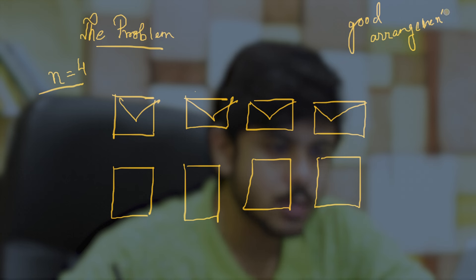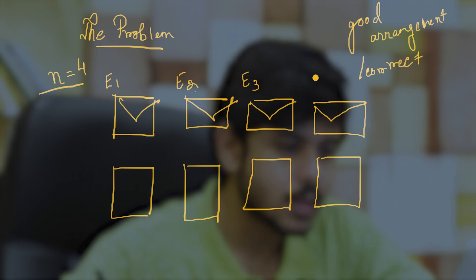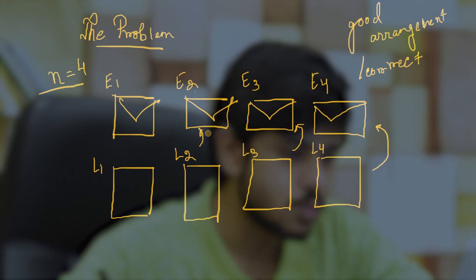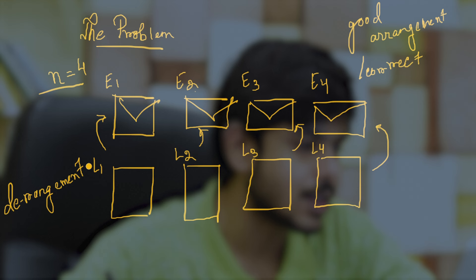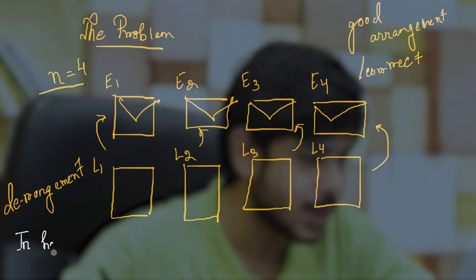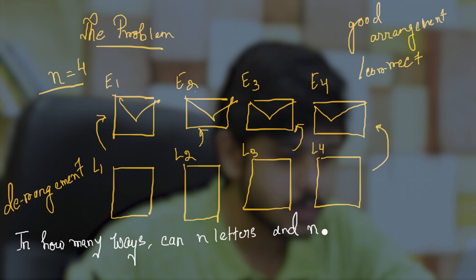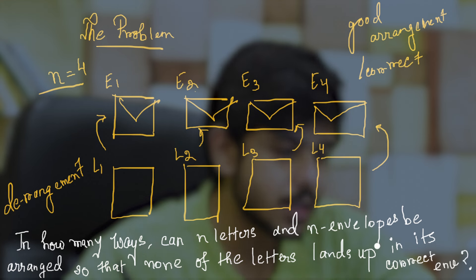Let's define something called a good arrangement. A good arrangement or a correct arrangement would ideally be a one-to-one mapping — envelope one, envelope two, envelope three, envelope four, and the corresponding letters L1, L2, L3, L4. In the good arrangement, L4 should go to E4, L3 to E3, L2 to E2, L1 to E1. However, what we are currently interested in is an arrangement that is not good — that is, a derangement. The question is: in how many ways can n letters and n envelopes be arranged so that none of the letters lands up in its correct envelope?